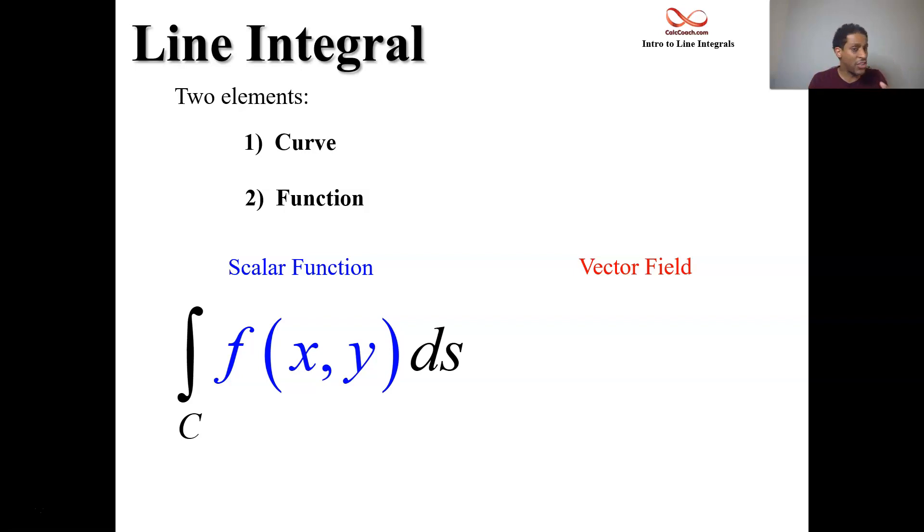Inside, you have your function f of x, y, or perhaps f of x, y, z. And then there's this element at the end called ds. And that's a piece of arc length in 2D. And so that's what we're going to have as the representation of a line integral from the scalar perspective view.